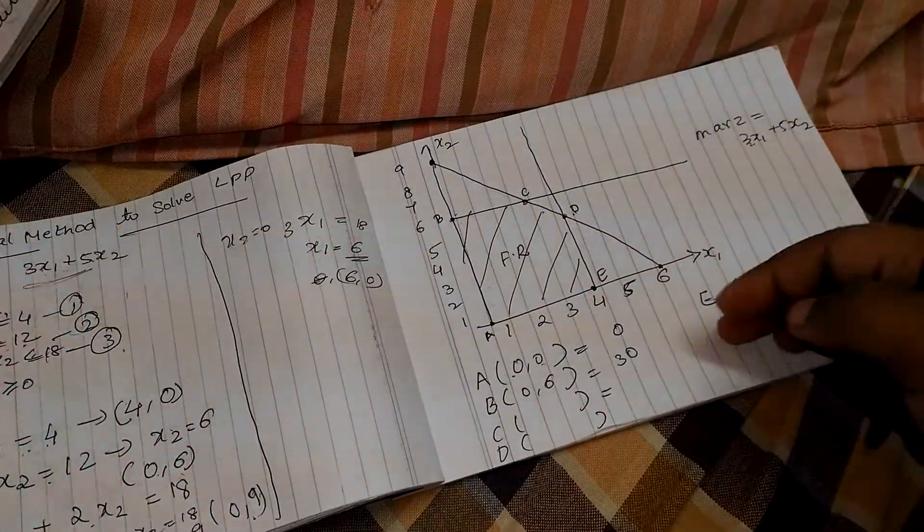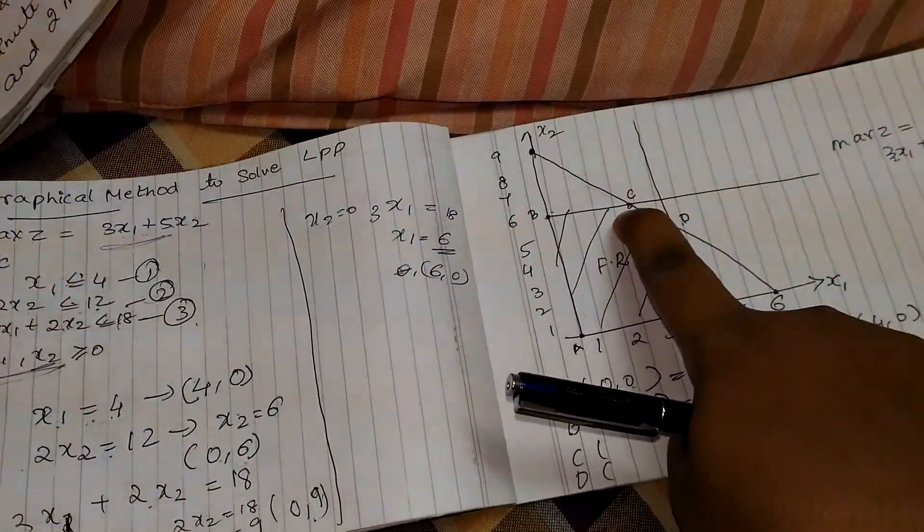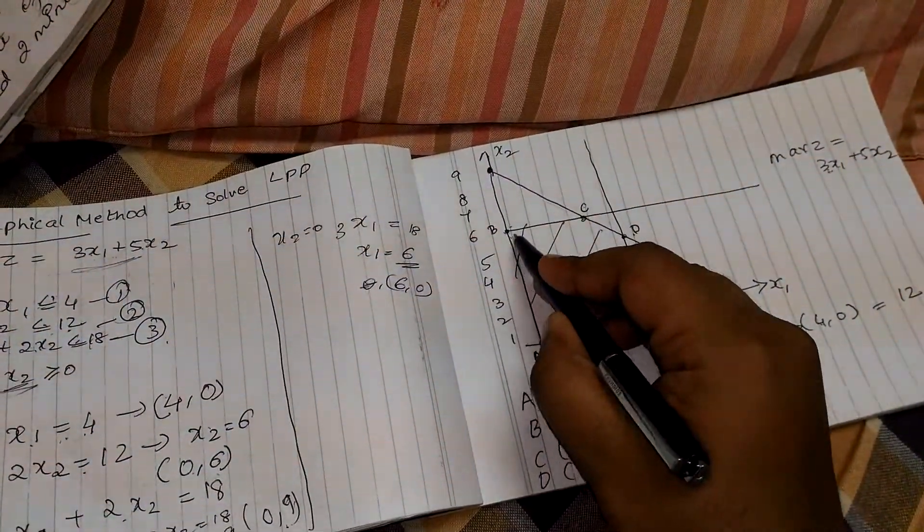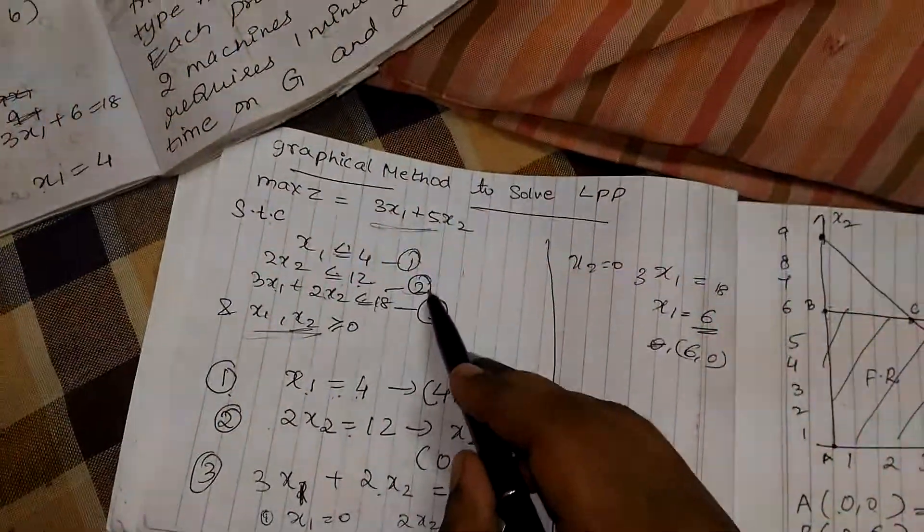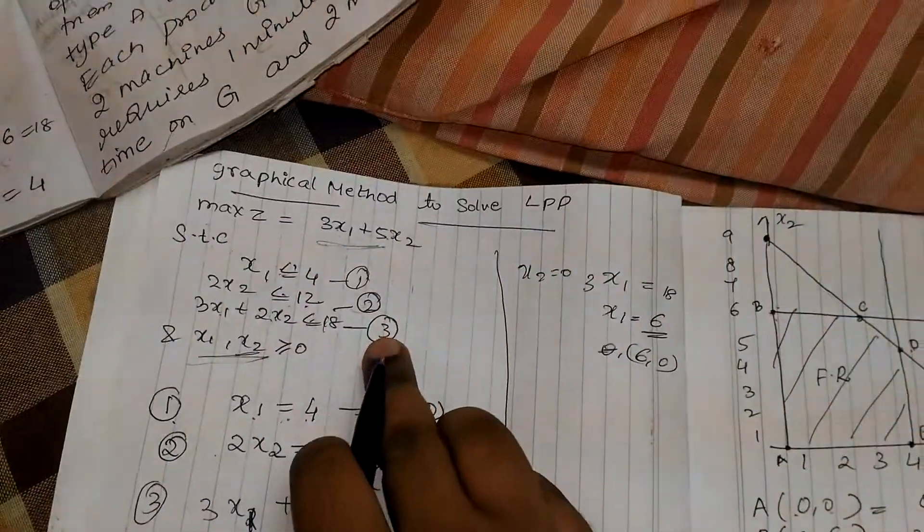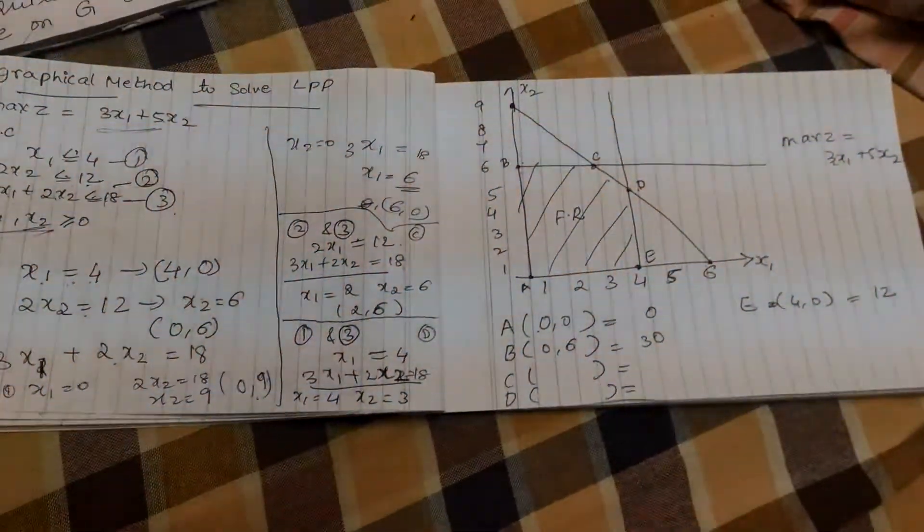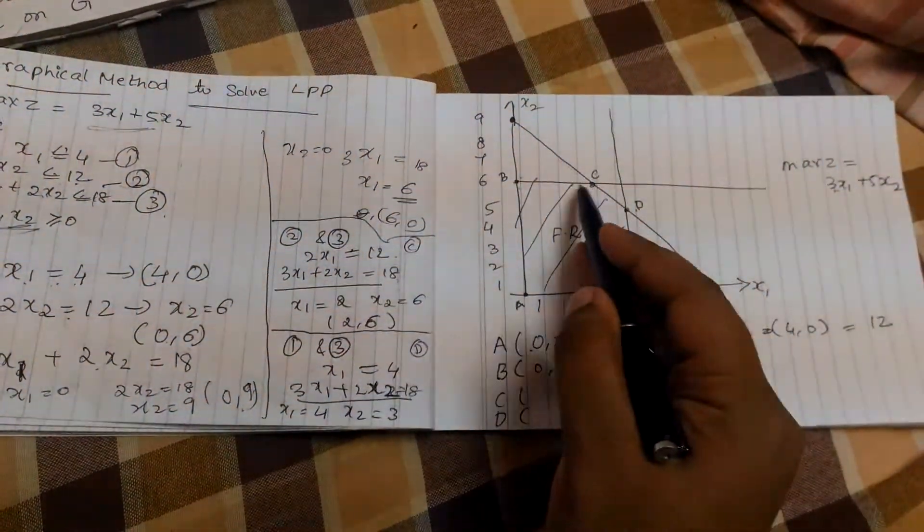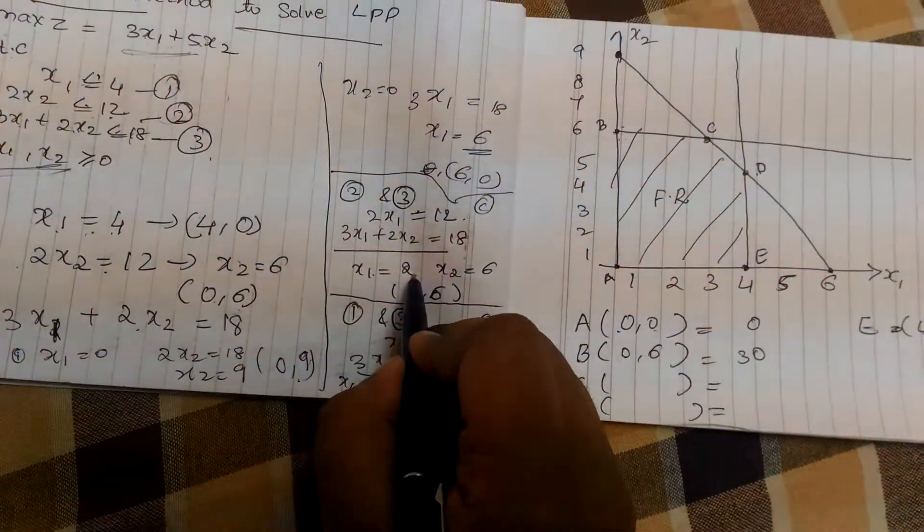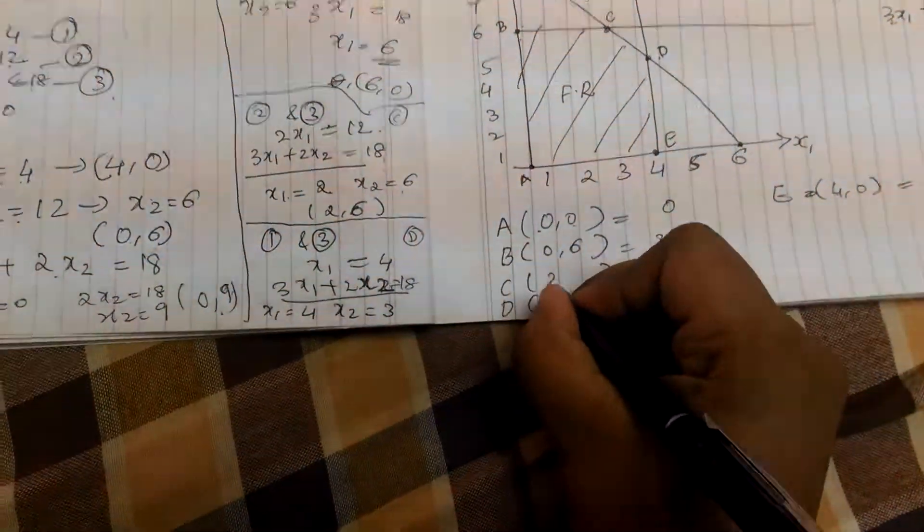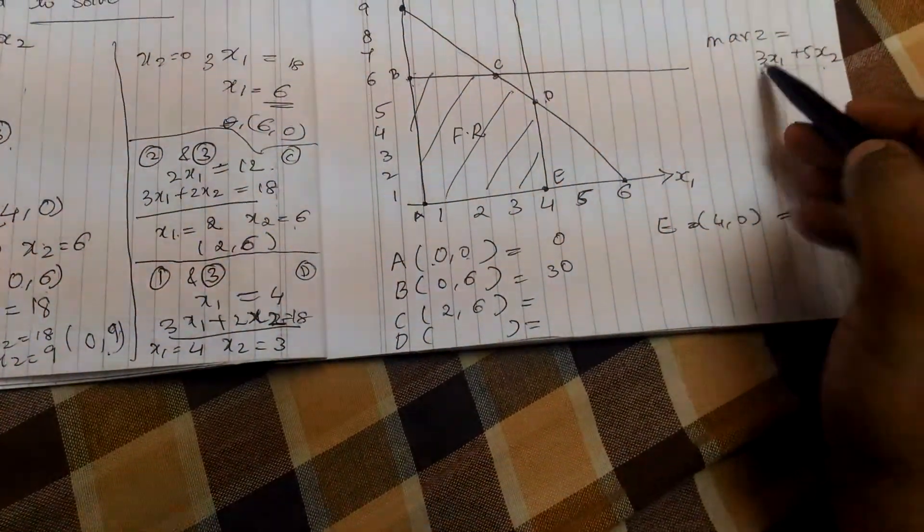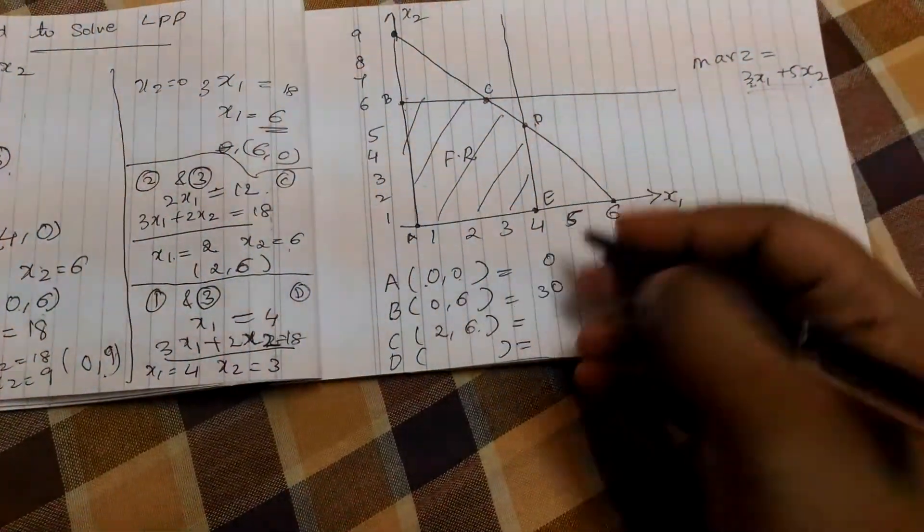Here, C value is, C point is formed by intersection of this line and this line. So, this line, the equation for this line is, we get by solving the equation 2 and equation 2 and 3, we need to solve. Now, to find the intersection point of C, we take the equation 2 and 3. By solving 2 and 3, we get x1 is 2, x1 value as 2 and x2 value as 6. So, we write here, 2, 6. Substitute this 2, 6 in the objective function. So, 3 into 2 plus 5 into 6 becomes 36.